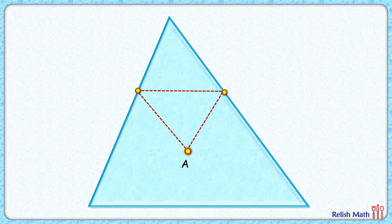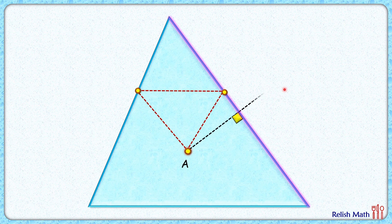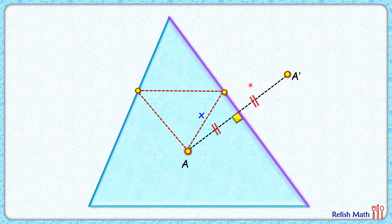Let's look at the solution. We start with the random triangle and treat one side length as a mirror. We draw a perpendicular line from point A to that side and take the distance equally on both sides, so A' is the mirror image of point A. If the perpendicular distance from A to the mirror is x, then the distance from the mirror to A' is also x.